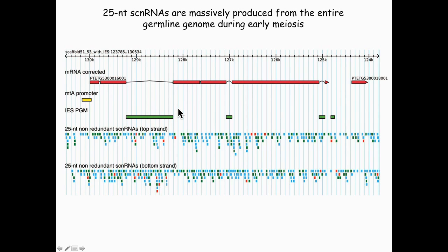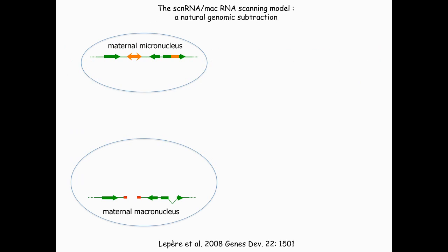Now if scan RNAs are produced from the entire germline genome, the question arises: how do they help in the recognition of IESs? I'll just briefly show the current model for genome scanning, which is supposed to explain how this is happening. It's an old model that most of you already know. It's still the best we have so far, even though it may not be entirely correct or very precise in some aspects.